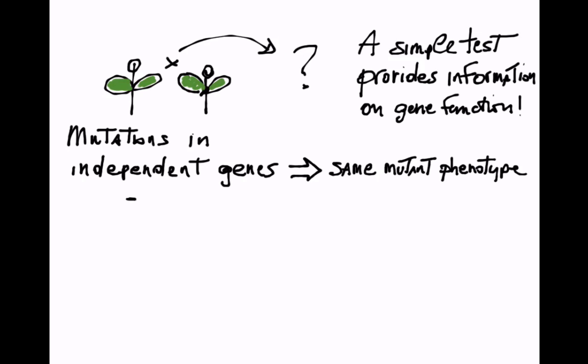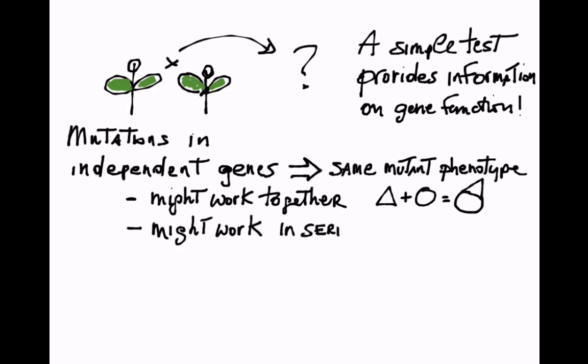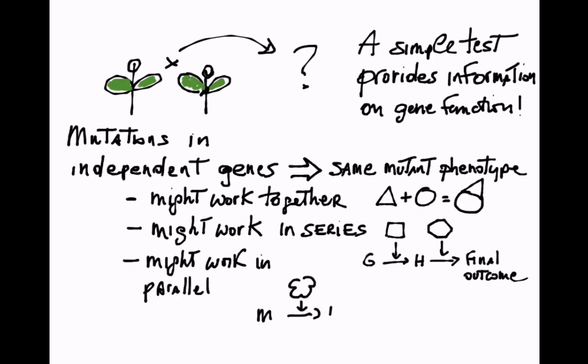First, the gene products may work together in a protein complex. Second, they may work independently but in series along a pathway, like in a bucket brigade. If one guy falls, the bucket stops. Another possibility is that the genes work in parallel and that the products of two independent pathways are needed for the wild-type phenotype.